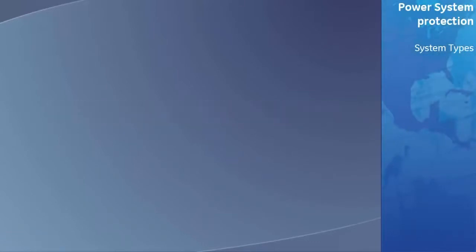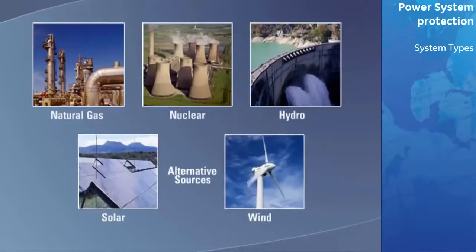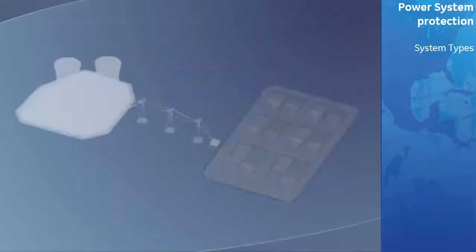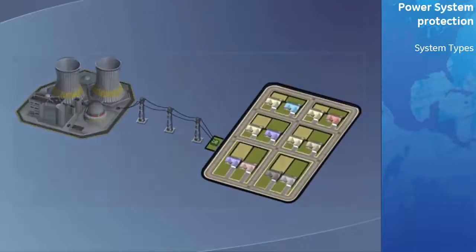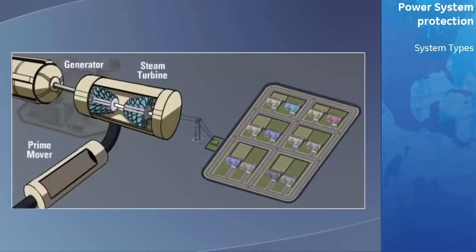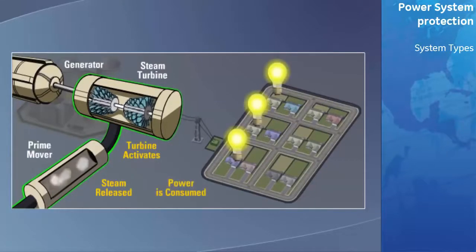There are many sources of electrical power: gas, nuclear, hydroelectric, and alternative. The electrical power generated by these sources must equal the power that is consumed. Let's take a look at a simple system consisting of a generator, steam turbine, prime mover and control system, and a residential load. As stated, the generated power must equal the demand, which is constantly changing.